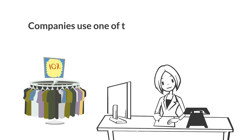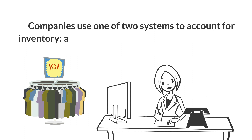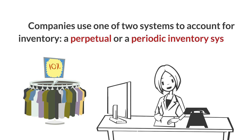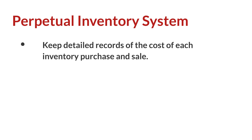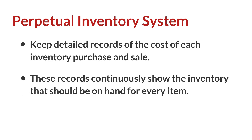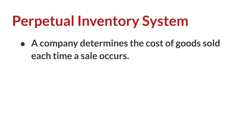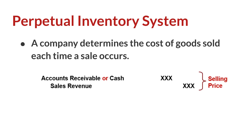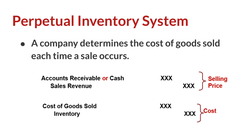To account for inventory, a merchandising company must choose either a perpetual or periodic inventory system. In a perpetual inventory system, companies keep detailed records of the cost of each inventory purchase and sale. These records continuously or perpetually show the inventory that should be on hand for every item. A company determines the cost of goods sold each time a sale occurs, so we would debit accounts receivable or cash and credit sales revenue for the selling price, and we would also debit cost of goods sold and credit inventory for the cost.